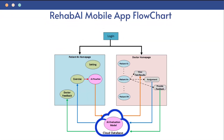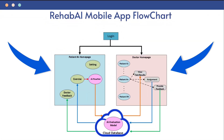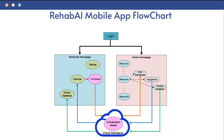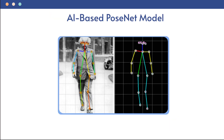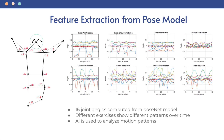Now, let's dive into its design. Rehab AI has separated doctor and patient user interfaces, and their communication is through a cloud database. The PoseNet model identifies key points on a person's body while they perform a workout. Next, we calculate joint angles from the key points identified by PoseNet.